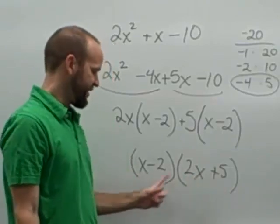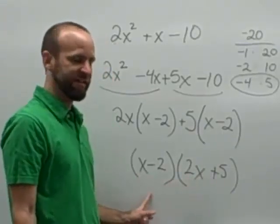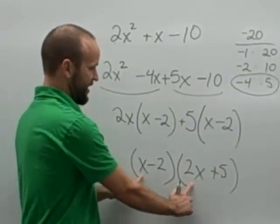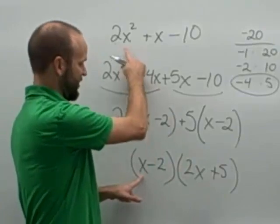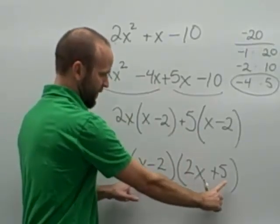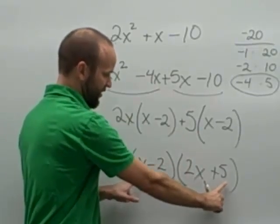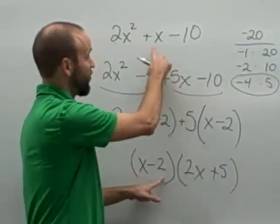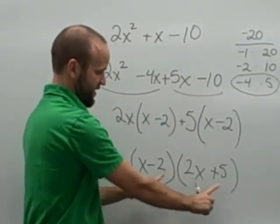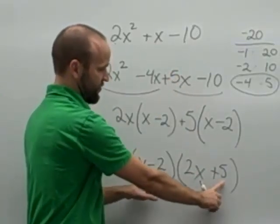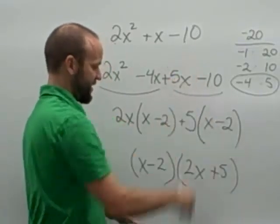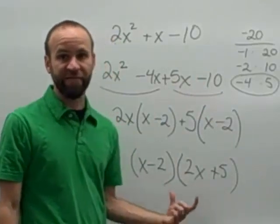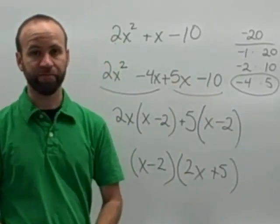If I factor out x minus 2, that leaves me with 2x here, and factoring out x minus 2 from the second part leaves me with 5. So what we end up with is one factor of x minus 2 and a second factor of 2x plus 5. It's easy to verify: 2x times x is 2x squared, the outer and inner terms give me 5x minus 4x which is 1x, and negative 2 times 5 is negative 10. So this is our trinomial written in factored form.